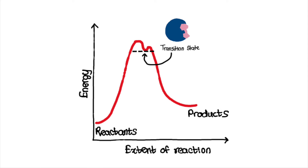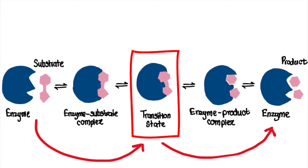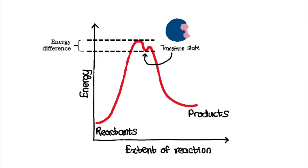Now let's go to the transition state stabilization. Isomerases stabilize the transition state of the reaction. The transition state is the state that the substrate molecule must go through in order to be converted to its product. This transition state is often unstable and requires a significant amount of energy to reach, so isomerases provide an environment in which the transition state is more stable, thus reducing the amount of energy required for the reaction to occur.